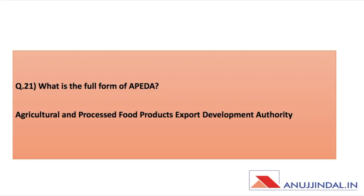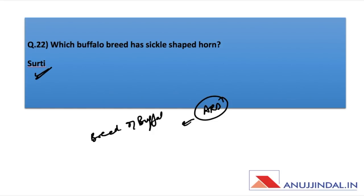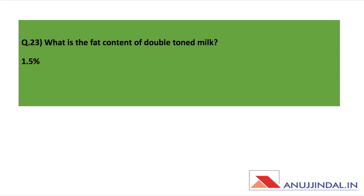The full form of APEDA is Agriculture and Processed Food Products Export Development Authority. Next, which buffalo breed has a sickle-shaped horn? Surti is the answer. In the ARD video on buffalo breeds, I explained about the Surti breed and asked viewers to pause and take a screenshot of the same.